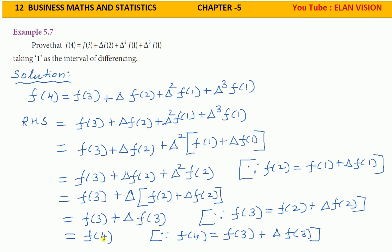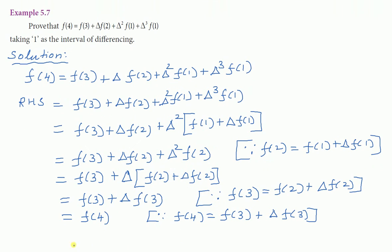f(4) is the left hand side value. That is equal to left hand side. RHS equal to LHS, hence the result.